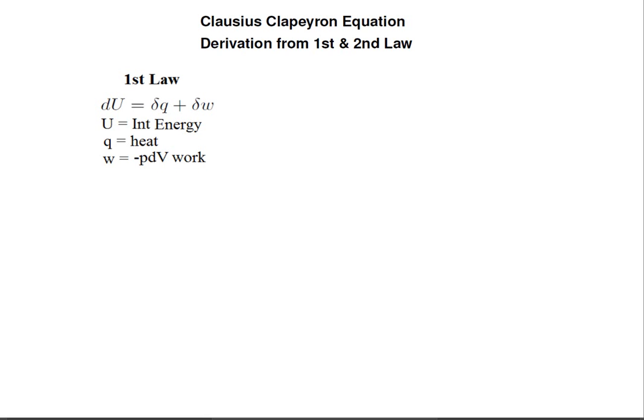It's interesting to me to note that whether you write the first law with a plus or a minus sign in front of the dW, that when you change it to PdV, the PdV will be negative.